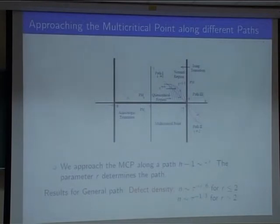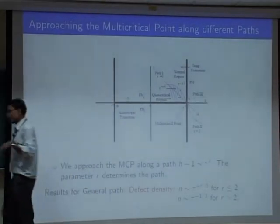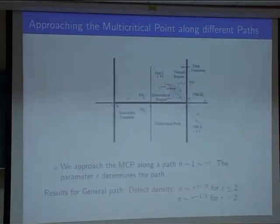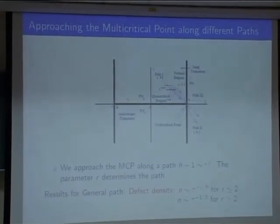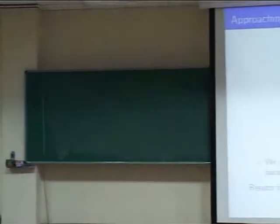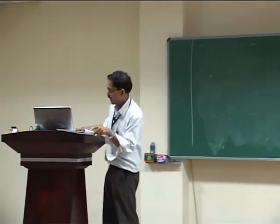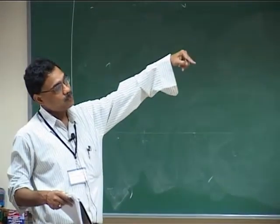Now finally: I have talked about non-linear quenching. I will mention one interesting result about multi-critical points. Here are two Ising critical lines and an anisotropic critical line — and you can cross a multi-critical point. I have a two-parameter scaling. The multi-critical point is at h = 1 and γ = 0, denoted by point A.